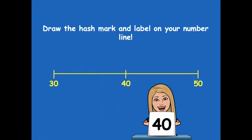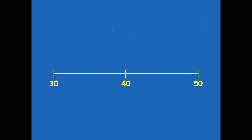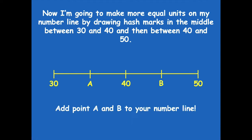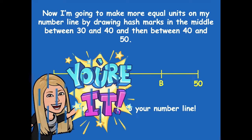All right, friends. Now I'm going to make more equal units on my number line by drawing hash marks in the middle between 30 and 40, and then between 40 and 50. I'm going to label the first one as A and the second one as B. Pause the video, add point A and point B to your number line, and then click play when you're ready for the next step.